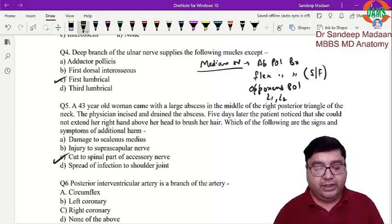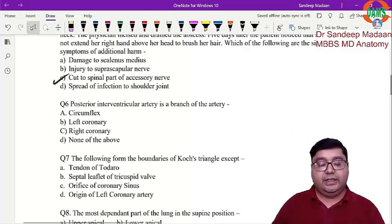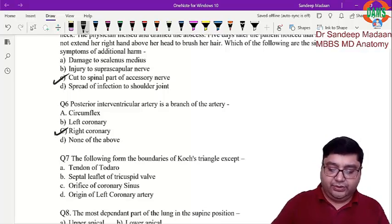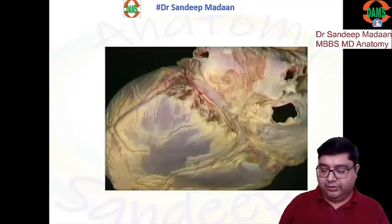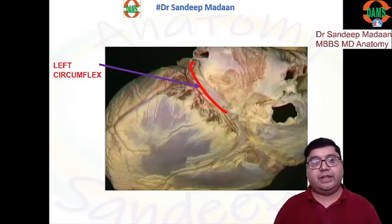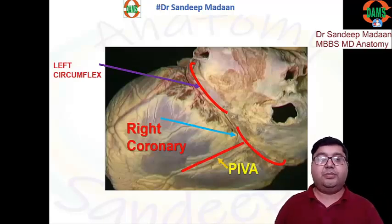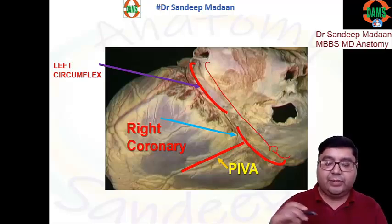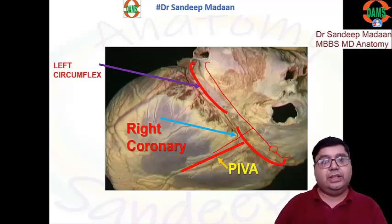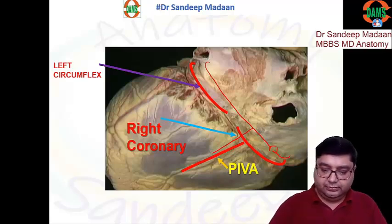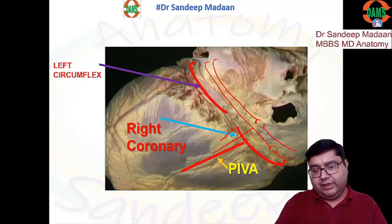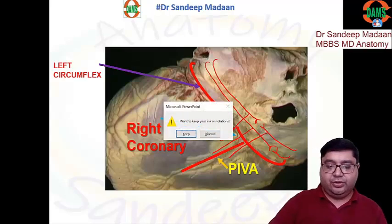Next question: posterior interventricular artery (PIVA) is a branch of what? PIVA is a branch of the right coronary artery. Looking at the posterior aspect of the heart, we see the left circumflex artery and the right coronary artery — PIVA is mostly a branch of the right coronary. Sometimes as a variation, the left circumflex reaches this point and gives PIVA, or both arteries contribute, which is called codominance.